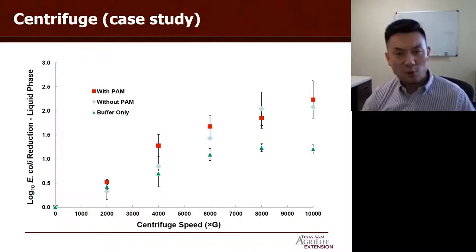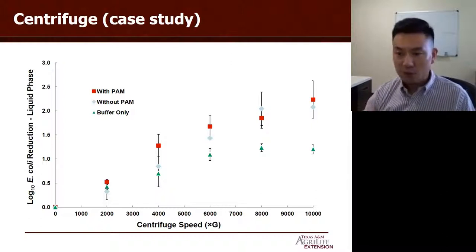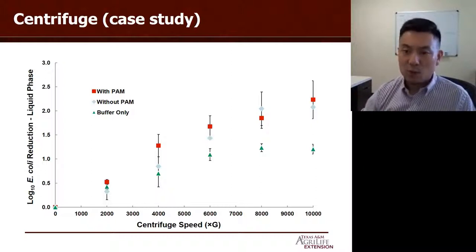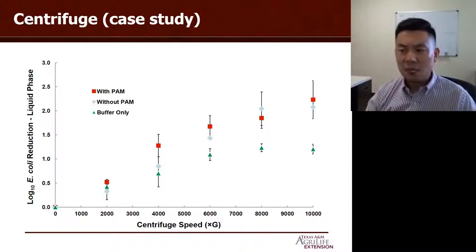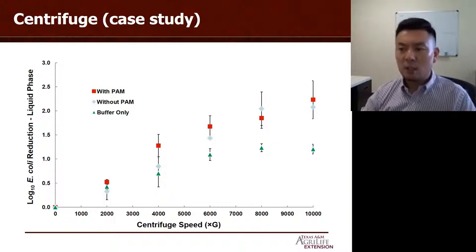Next is centrifugation. Some large farms use centrifugation to treat manure slurry. One farm invited us to evaluate their treatment efficiency for solids, nutrients, and bacteria. Our results showed that higher centrifuge speed reduces solids, nutrients, and bacteria. I should mention that with both polymer and centrifuge treatment, what we do is remove bacteria and pathogens from the liquid system, because the large liquid volume makes it harder to increase temperature or apply other treatments. So we reduce the volume, get the solids, and then treat those solids more easily — for example by drying or composting.